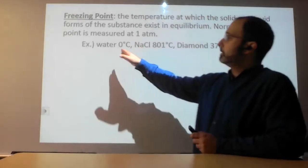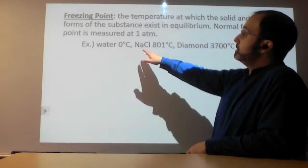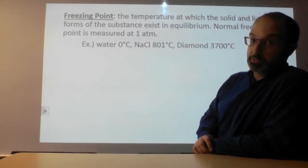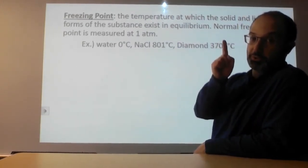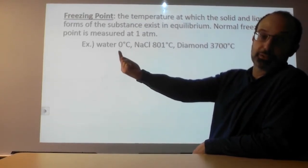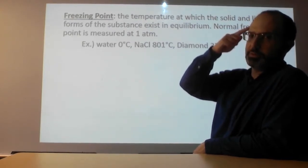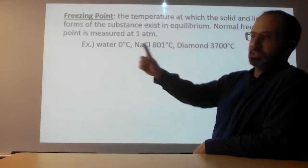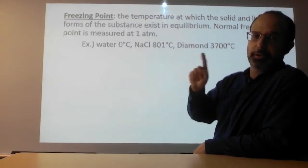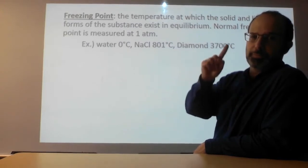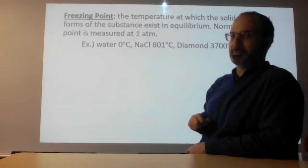Water, for example, will melt or freeze at zero degrees Celsius; sodium chloride at 801 degrees Celsius; diamond at 3,700 degrees Celsius. So diamond is very hard to melt; water is fairly easy by comparison. All of this is related to intermolecular forces — which one of these do you think has the strongest? Probably diamond, though technically intramolecular forces in that case, but we'll talk about diamond a little later.